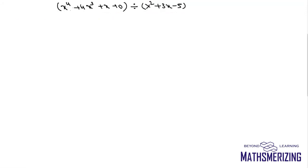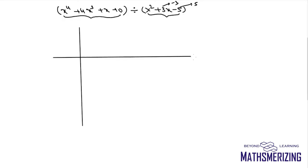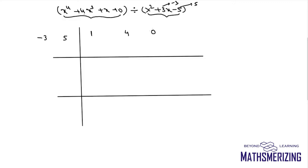For an example, suppose we want to divide x⁴ + 4x³ + x − 10 with x² + 3x − 5. I take the negatives of the coefficients, writing −3 and +5 on the left. The coefficients of the polynomial are: 1 (for x⁴), 4 (for x³), 0 (no x² term), 1, and −10.